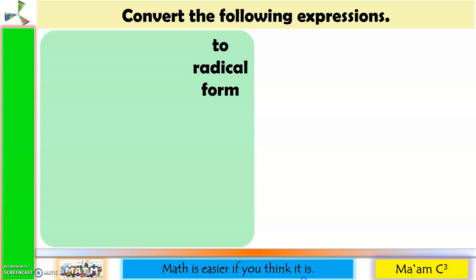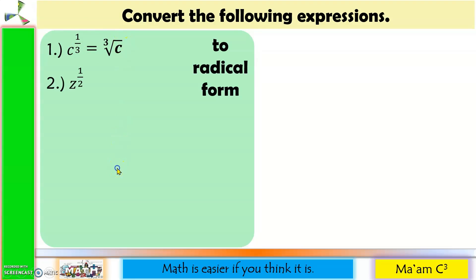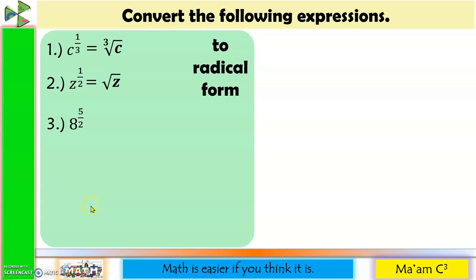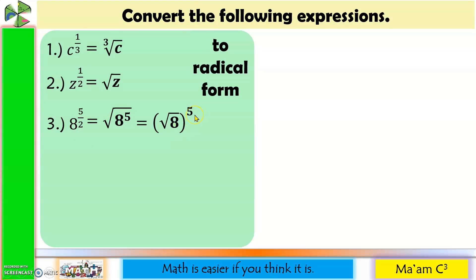Let us convert the following expressions to radical form. Number 1: c raised to 1 third. Since 3 is the denominator, it becomes the index, so this is equivalent to the cube root of c. We do not write 1 as an exponent in the radicand. Number 2: z raised to 1 half. So 2 is the index, giving us the square root of z. Note that 2 is not written; if no number is written, the index is understood to be 2. Number 3: 8 raised to 5 over 2. This equals the square root of 8 to the 5th power, or equivalently the quantity square root of 8 raised to the 5th power.